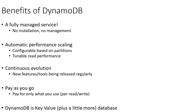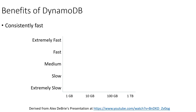DynamoDB is pay-as-you-go even more so than most AWS services. You're paying per transaction — every million transactions costs you a certain number of dollars, so every transaction costs just a fraction of a cent. It's very granular billing, which is kind of nice.